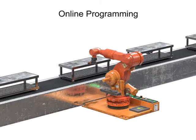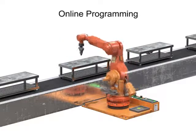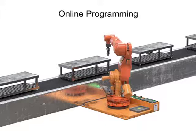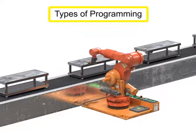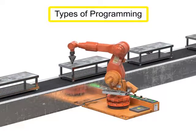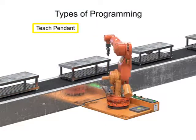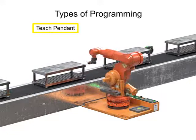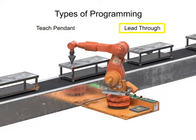Online programming occurs when the robot is online or in an operational mode. The two types of programming we will discuss here are teach pendant programming and lead-through programming.